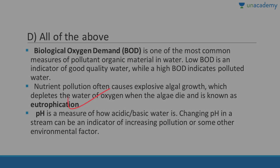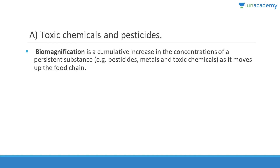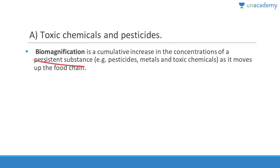Question 308: Major causes of biomagnification involve toxic chemicals and pesticides like DDT, which undergo magnification in the food chain. For example, DDT enters water, is absorbed by phytoplankton, eaten by small fish, then bigger fish, then eagles — causing brittle eggshells. Biomagnification is the cumulative increase in concentration of a persistent substance such as pesticides, metals, or toxic chemicals as it moves up the food chain.